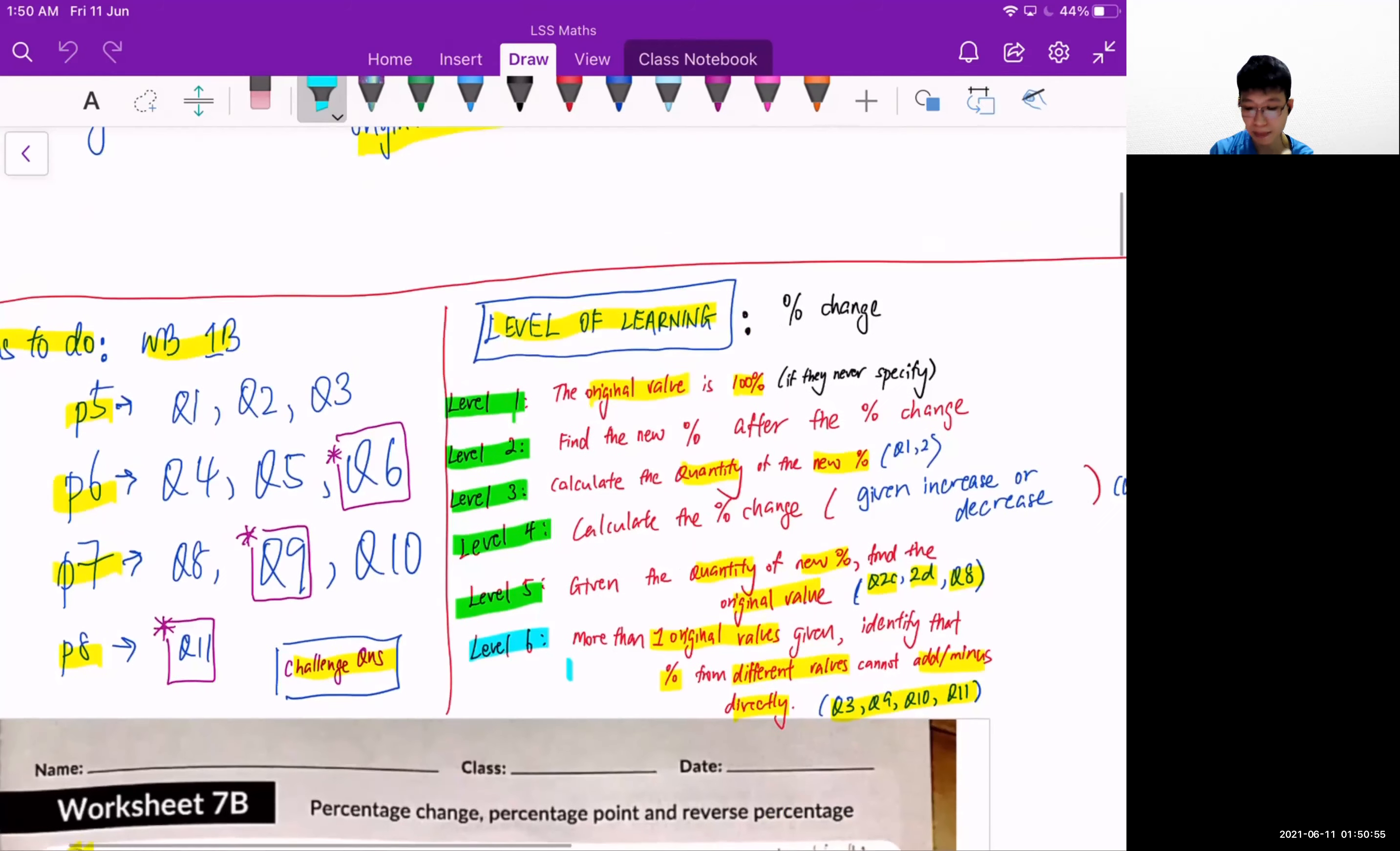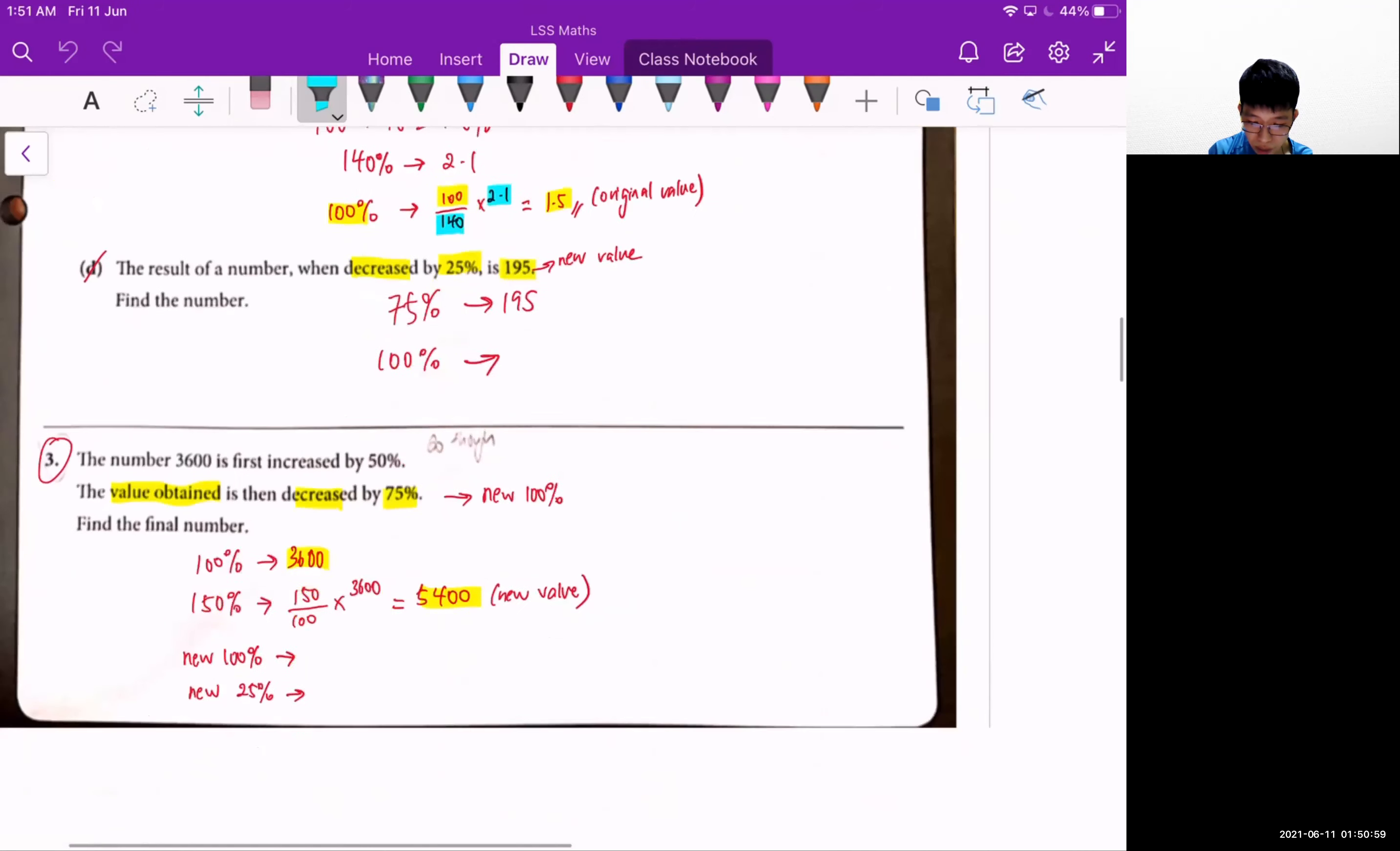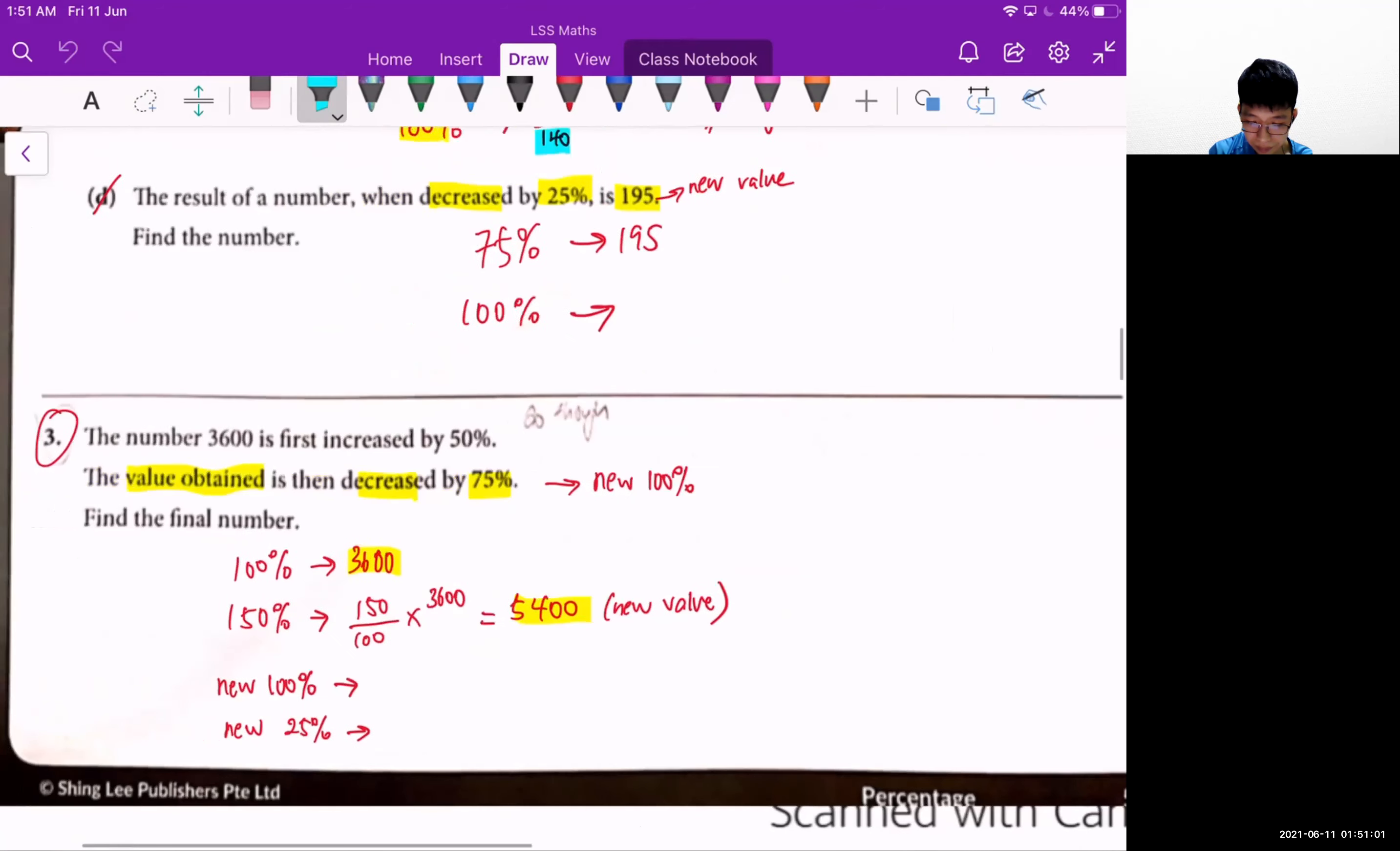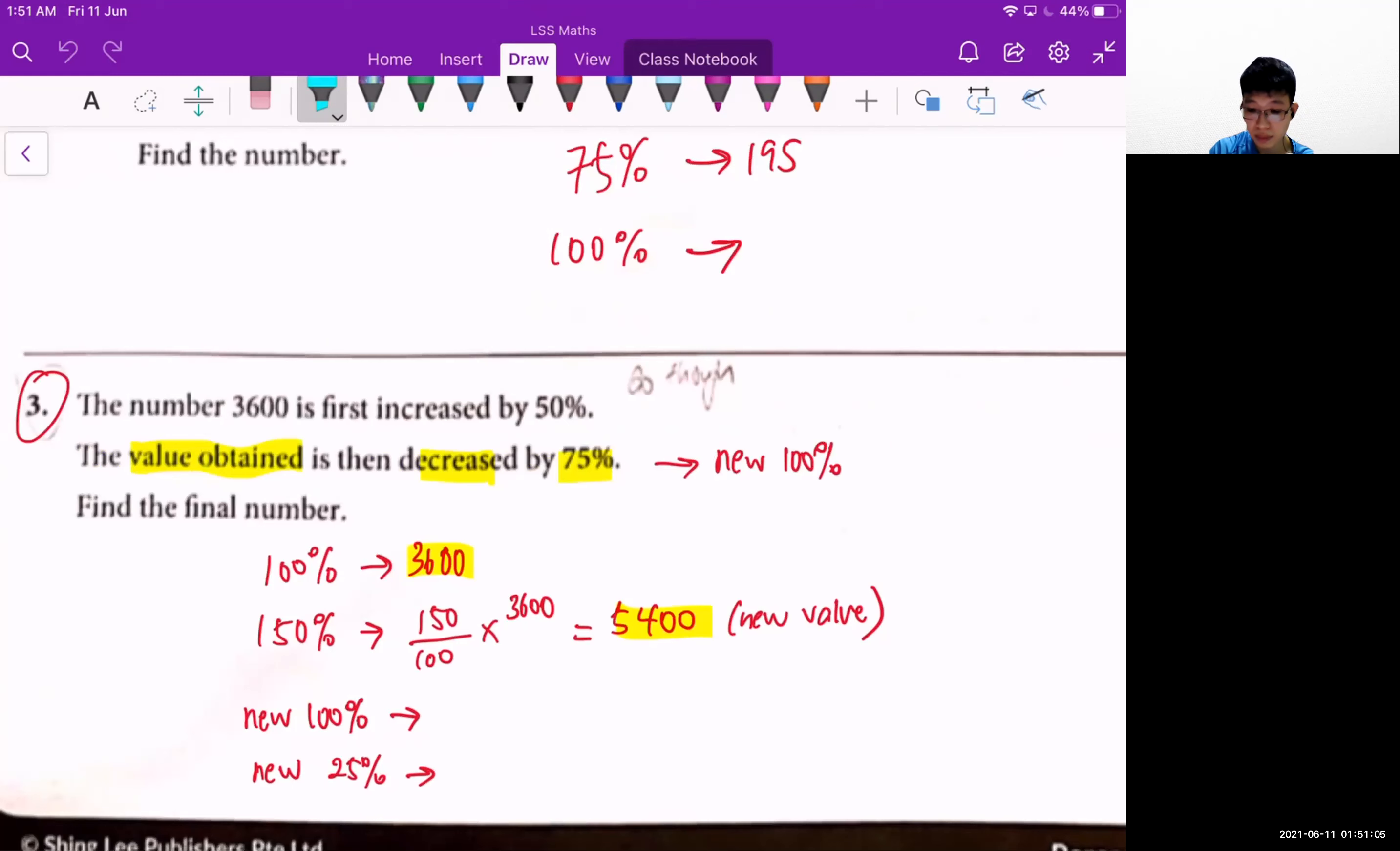Let me show you one example. Let's look at question 3. For this question, let's read the question step-by-step. The number 3600 is first increased by 50%.